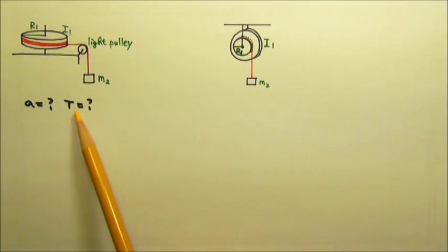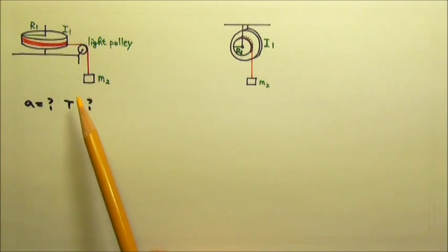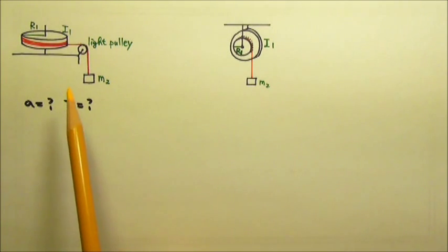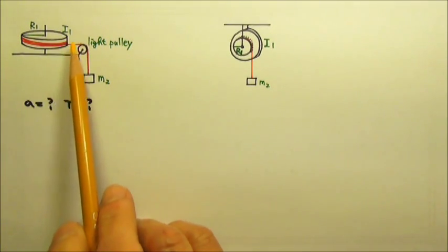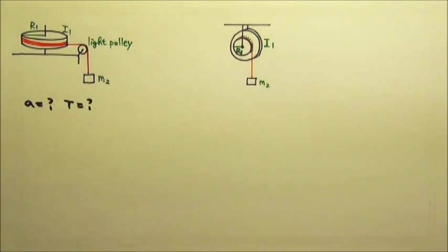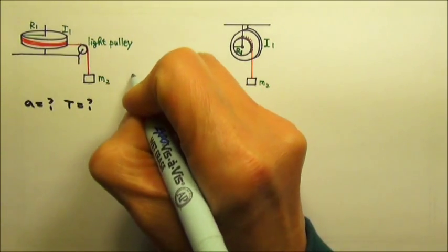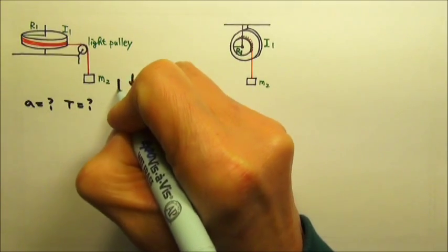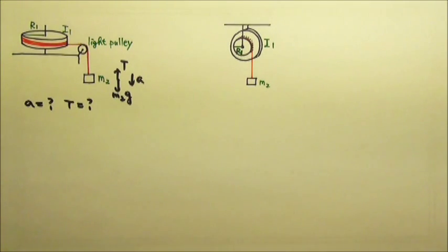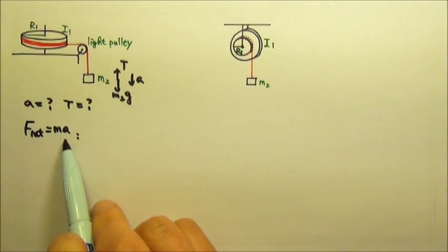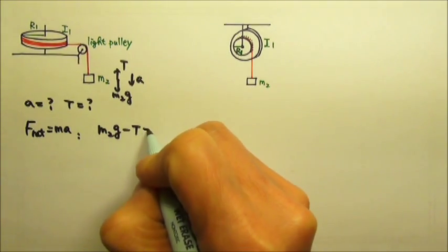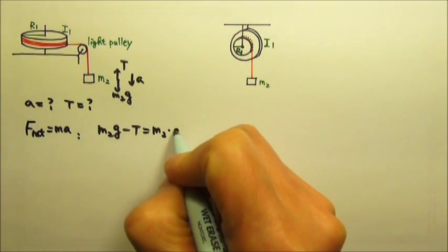To find acceleration and the tension, we have to write a force equation for everything that is doing translational motion and write net torque equals I alpha for the object that does rotational motion. The acceleration goes down and we have M2G going down and the tension going up. So the net force equals MA gives us M2G minus tension equals M2 times A.